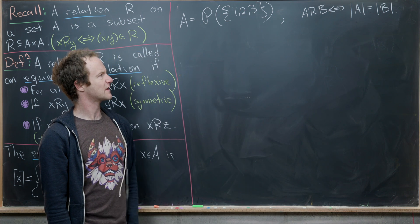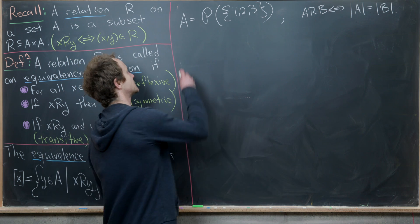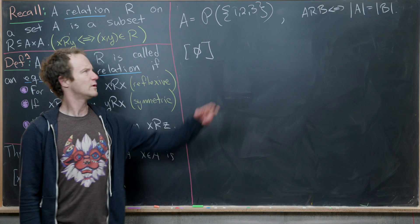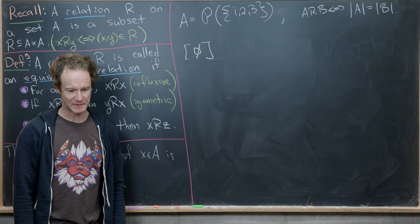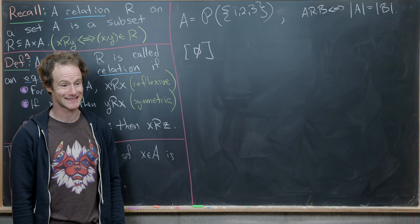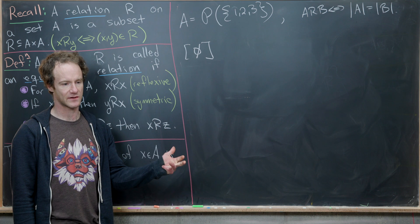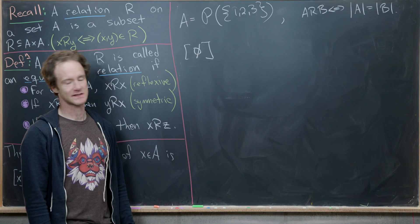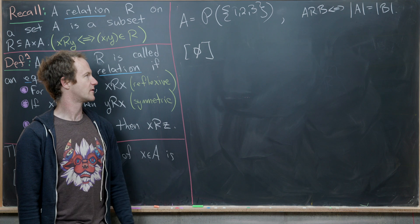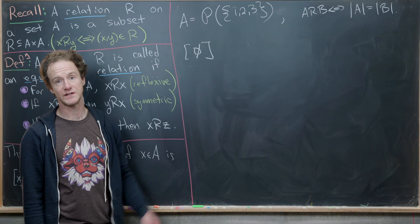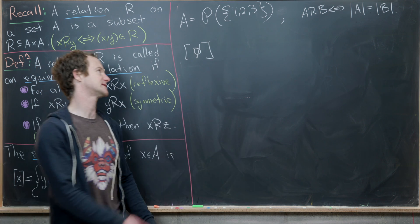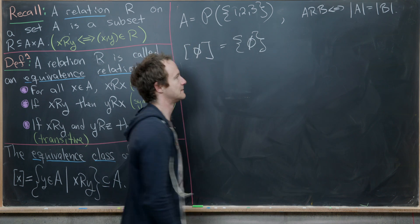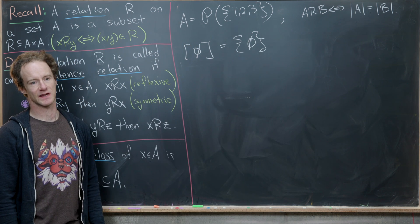Let's look at the equivalence classes. Possible subset sizes of {1, 2, 3} are zero, one, two, and three. For the equivalence class of the empty set: there's only one subset with zero elements, so the equivalence class of the empty set is just the empty set itself.